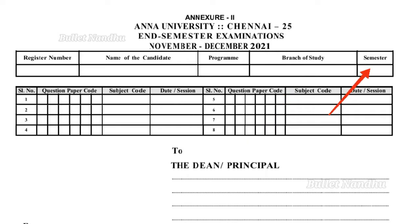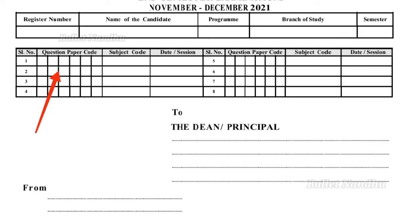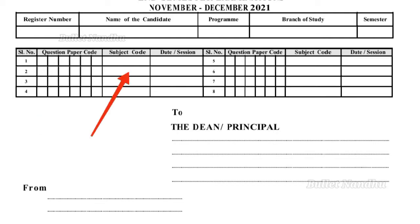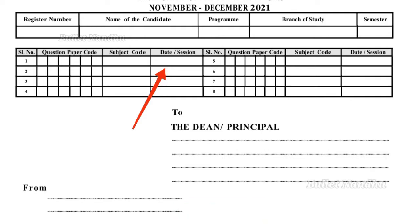Let's take a look. We have Annexure 2 in the post for the last semester exam. Now there are subject codes — if you have any exam, you will need the subject. You will also need the date and session for the first date and session.